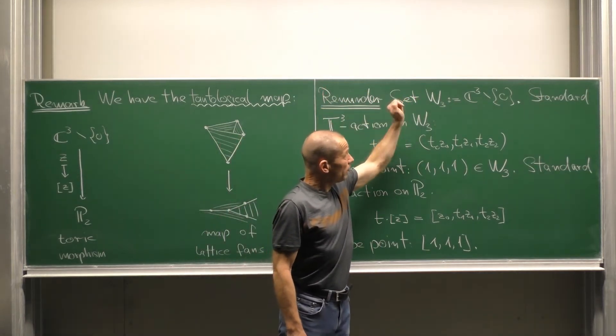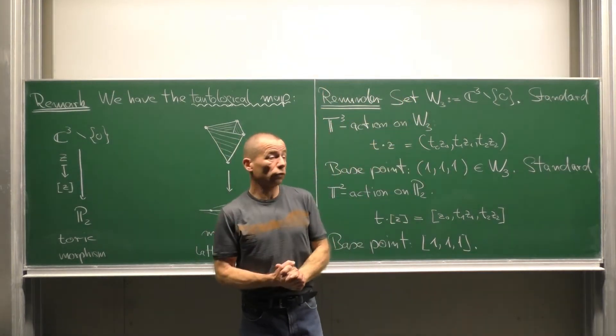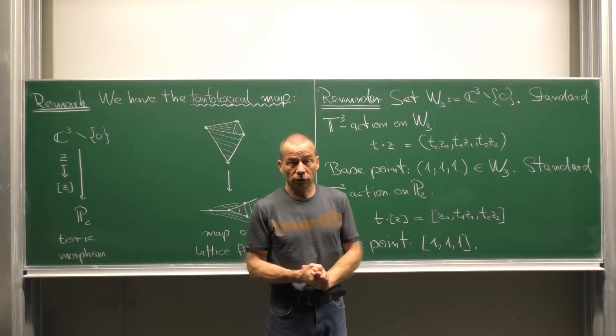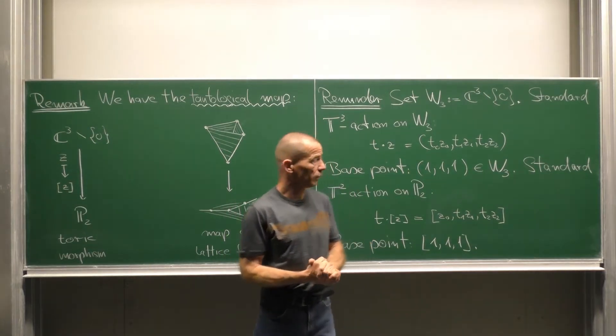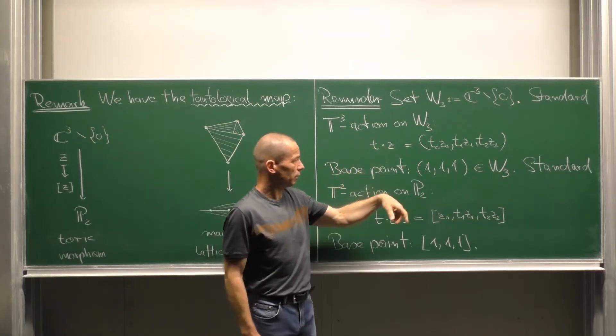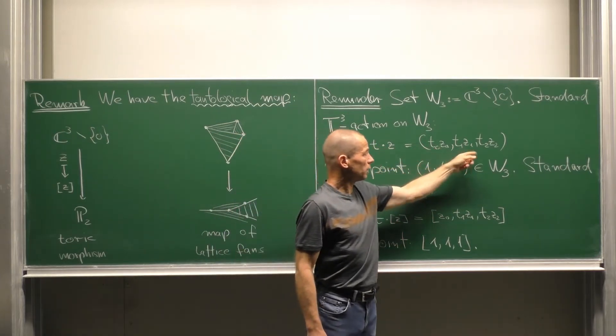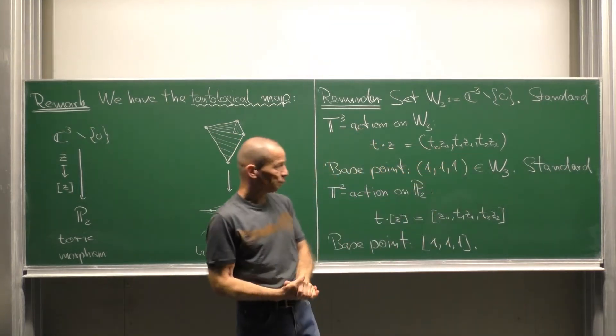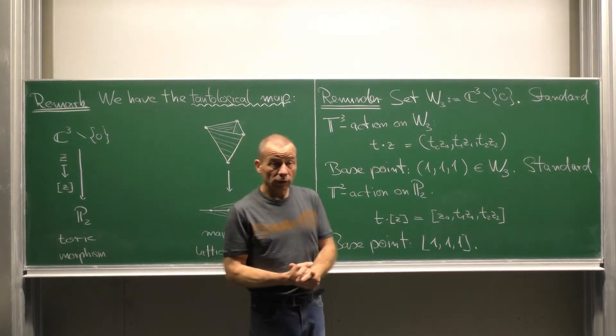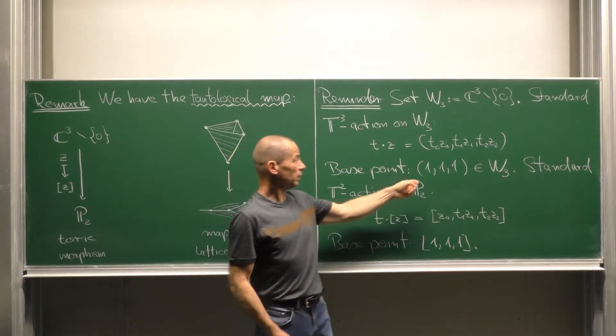Let us briefly recall the involved toric structures. Write W₃ for C³ minus the origin, then on W₃ we have this standard three-toric section given by T·Z equal T₀Z₀, T₁Z₁, T₂Z₂. The base point of this toric variety is the point (1,1,1).